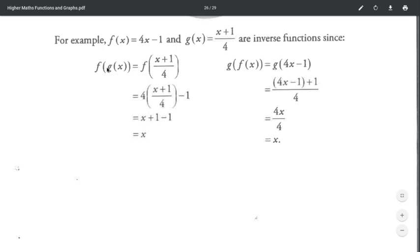To show that mathematically, we evaluate f(g(x)). So f of (x+1)/4. We're just replacing this x here with everything in the bracket. So four times something divided by 4 will just be that something, it'll just be x plus 1 minus 1 which equals x.